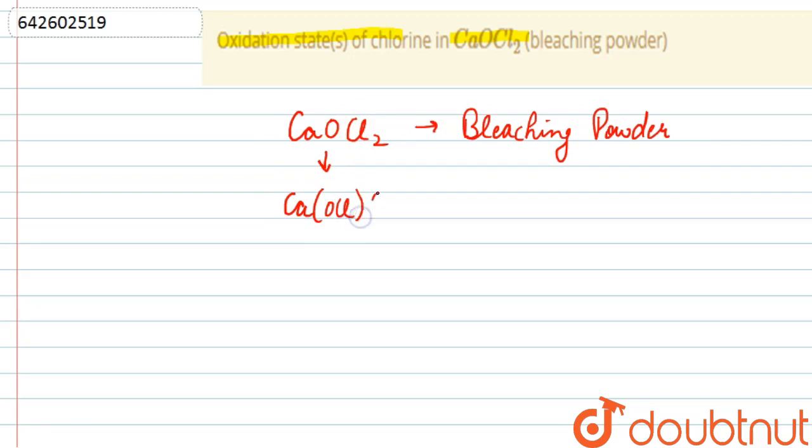In this compound, calcium is always plus two, and chlorine in this complex is minus one and minus one. So one of the chlorines has oxidation state minus one.